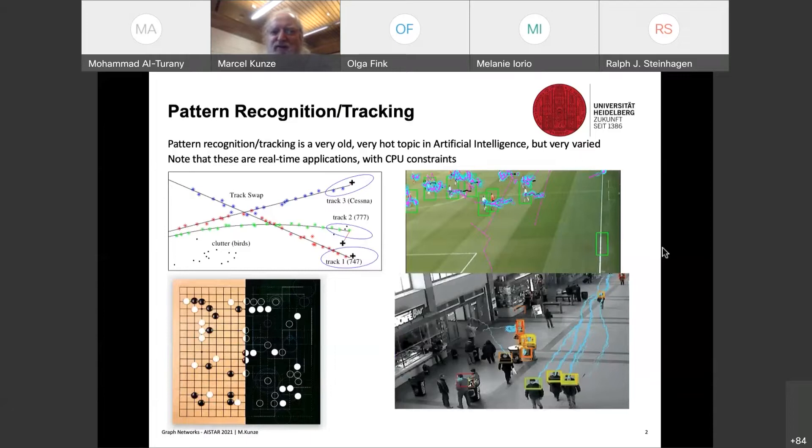So you see some examples from gaming, for instance, if you look at soccer, but also tracking is important in security concerns. You see here tracking people and also very prominent is tracking in the aircraft sector. So tracking aircrafts here, you see an example of three aircrafts. So you have here measured points by radar. And the task is to then connect these points and determine the flight direction.